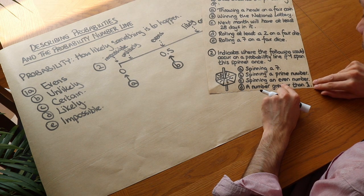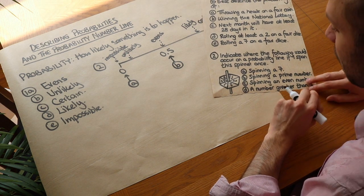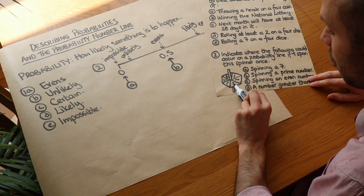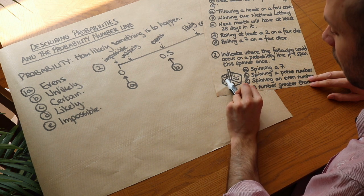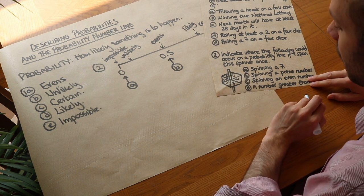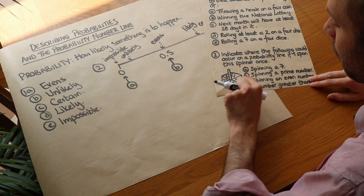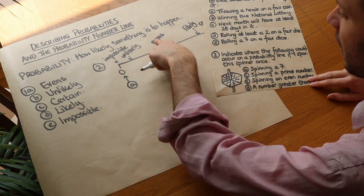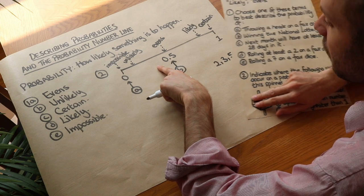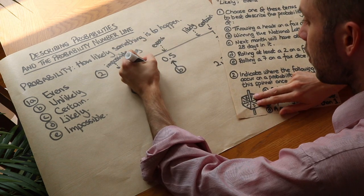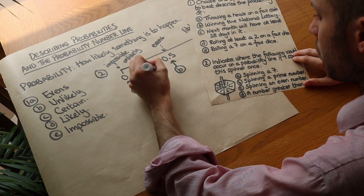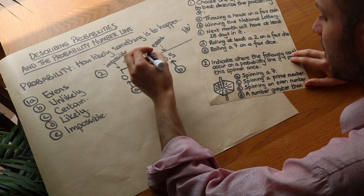What about spinning an even number? Well, let's count how many even numbers we have. 1 is odd. It's not even. 1 is odd. 2 is even. 3 is odd. 5 is odd. And 6 is even. So 2 out of the 6 things on our spinner are even. Now we know that there was 3 out of 6. That's half the time. So that would be evens. So 2 out of 6 would be slightly lower down. In fact, it would be a probability of a third. But we're just going to put it here on our number line. Spinning an even number would be slightly less than half because there's only 2 out of the 6.